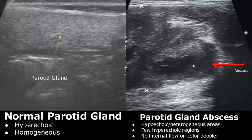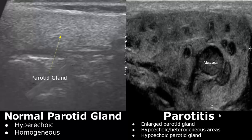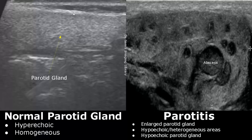Parotitis is the inflammation of the parotid gland and occurs in cases such as mumps. An enlarged parotid gland is seen with hypoechoic and heterogeneous areas. Overall, the affected parotid gland appears hypoechoic, whereas the normal parotid gland is hyperechoic.